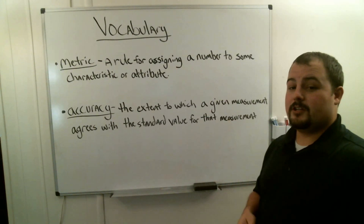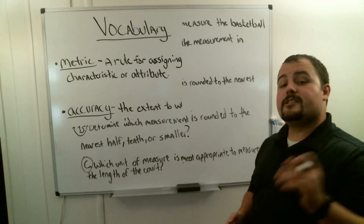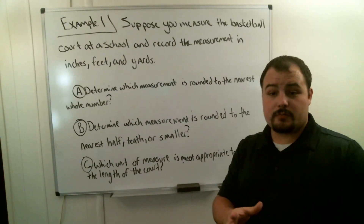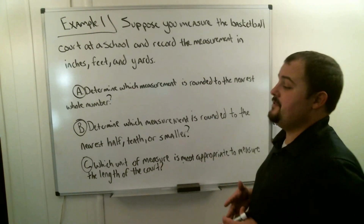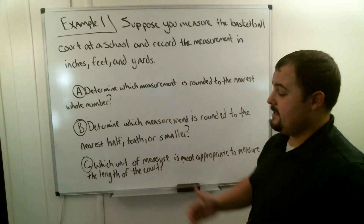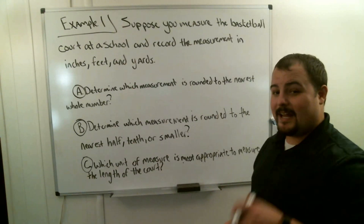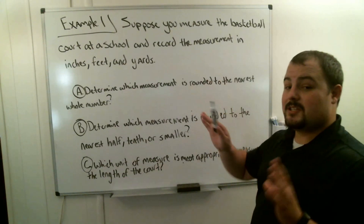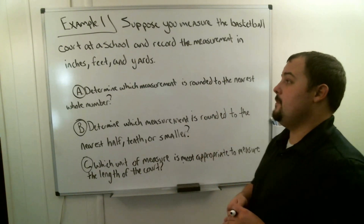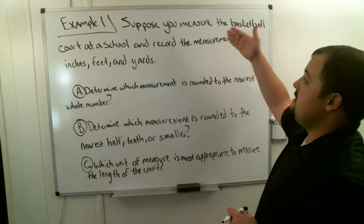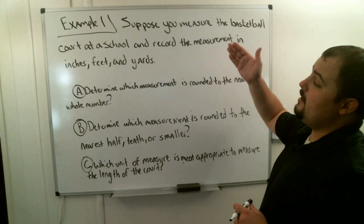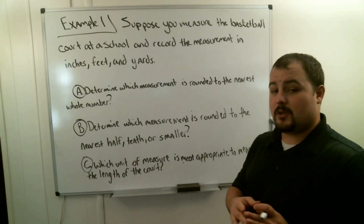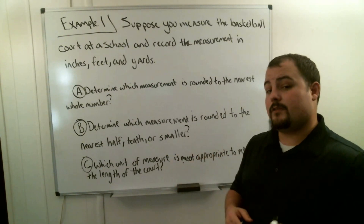Make sure you have your vocab and let's move on to our first example. In example one we're looking at a question with three different parts — do not confuse this with a multiple-choice question. Sometimes students see A, B, C and just pick one. The problem says: suppose you measure a basketball court at a school and record the measurement in inches, feet, and yards. We're going to record the basketball court's measurements in three different units.